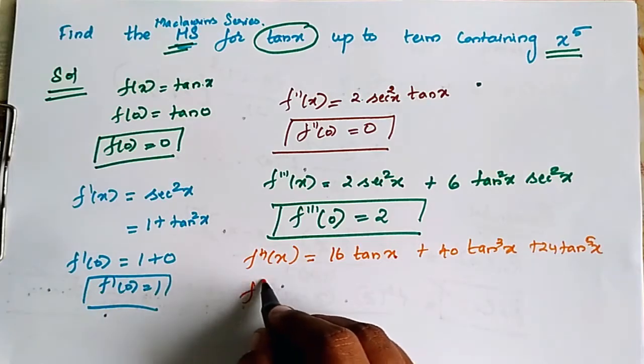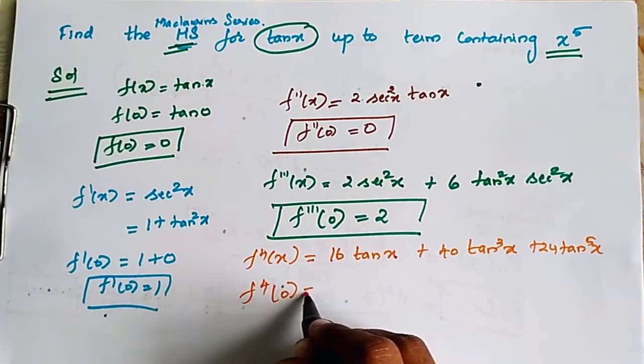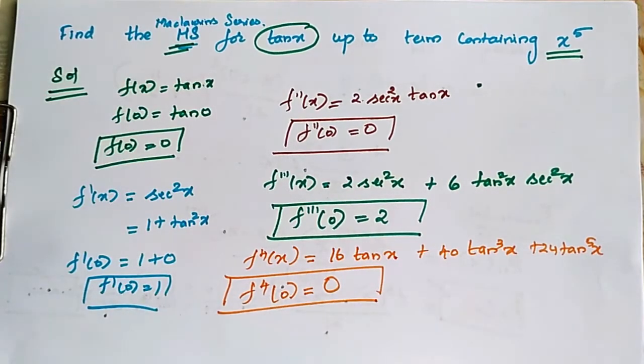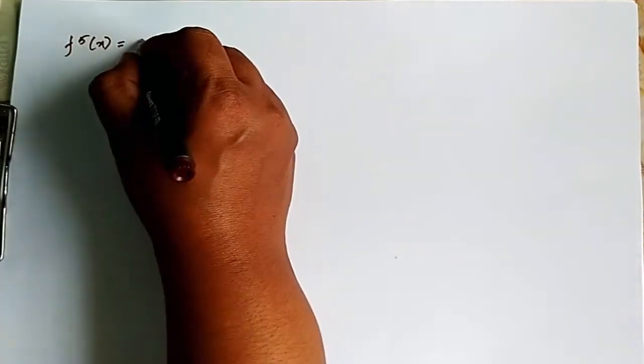So now we substitute 0 in this, we get 8 secant square x plus 120 tan square x,